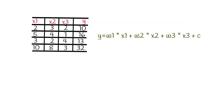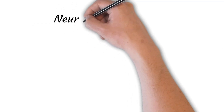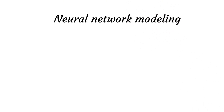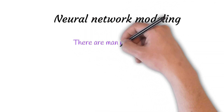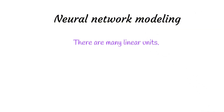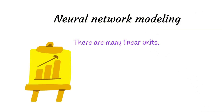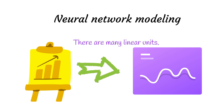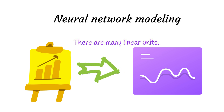Now let us talk about neural network modeling. In a neural network, instead of one linear unit there are many linear units. The combination of these linear units creates a non-linear functionality, which results in a much more accurate prediction, capturing complex relationships between the input and output variables.